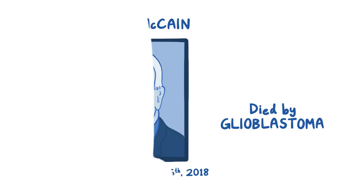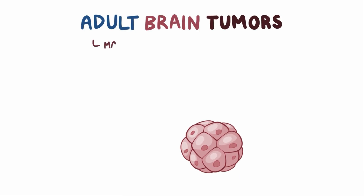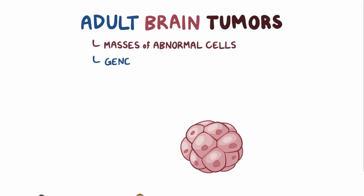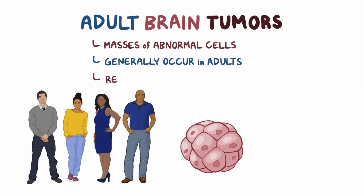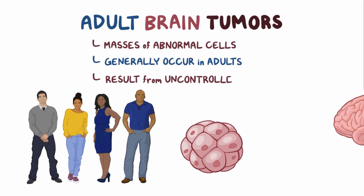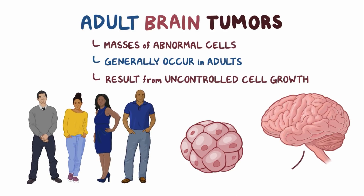First, let's zoom out and look at brain tumors in general. Adult brain tumors are masses of abnormal cells that generally occur in adults and result from the uncontrolled growth of those cells within the brain.